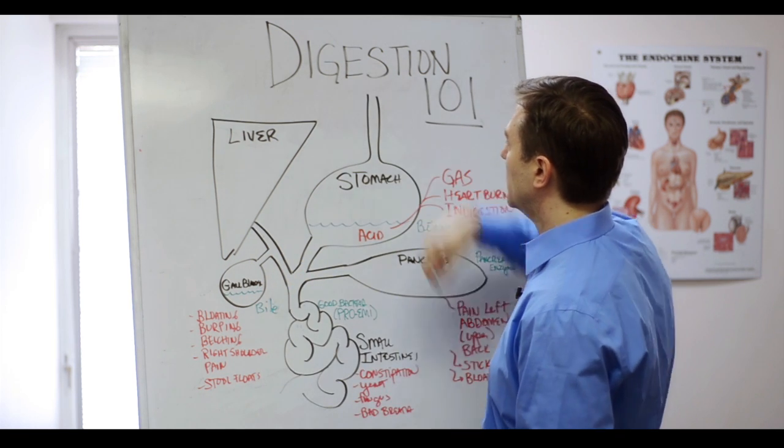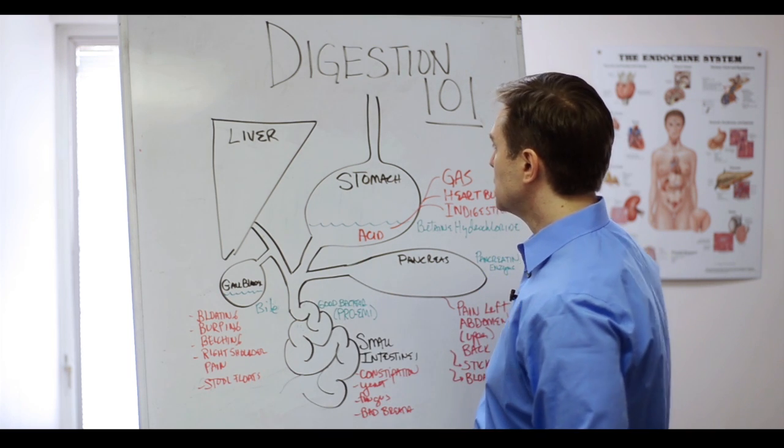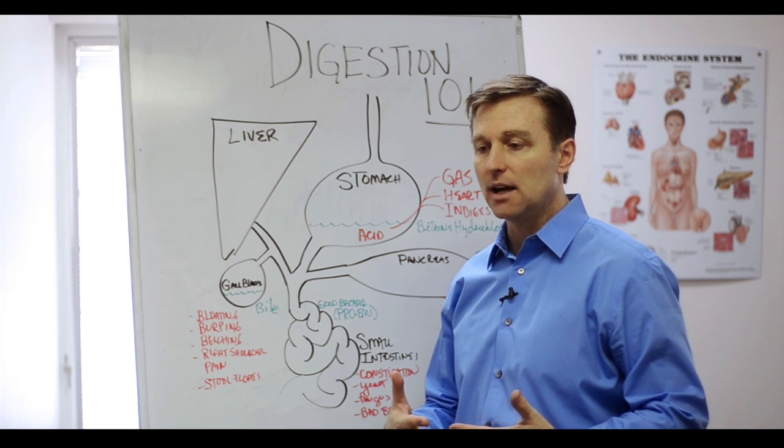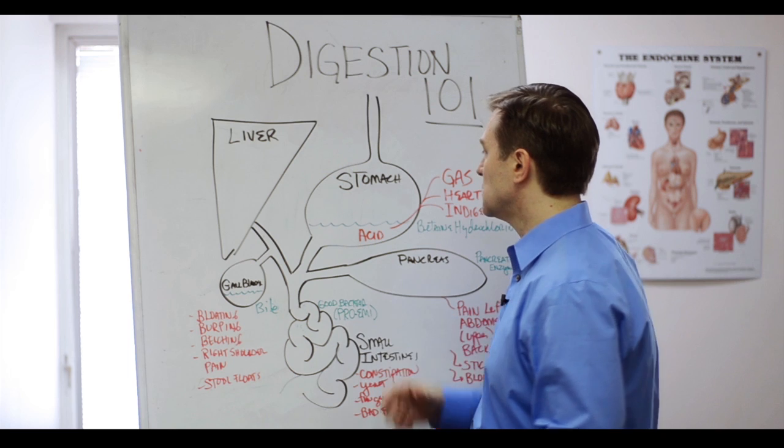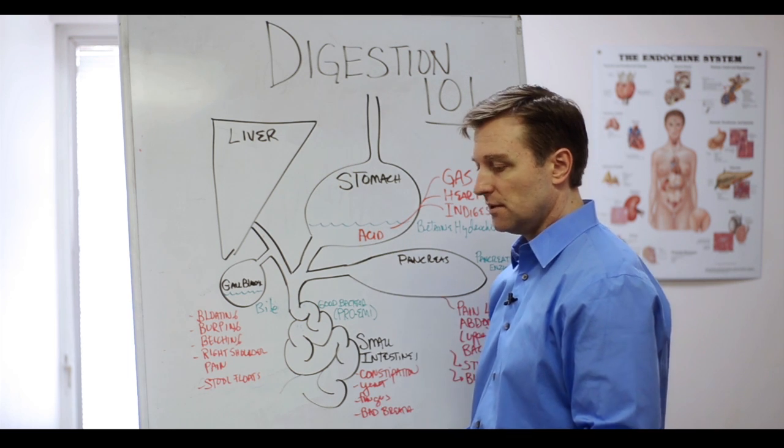We've got the stomach right here, and the stomach makes very strong acid. There's two places in the body that you have this strong acid. One is in the stomach, one is in the vagina because you want to kill off the bacteria. And when this pH becomes more alkaline, you have all sorts of issues that occur.